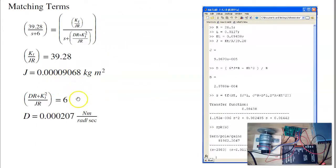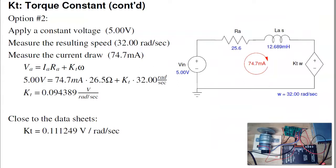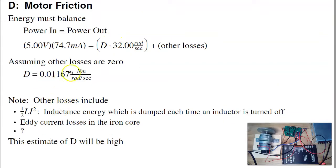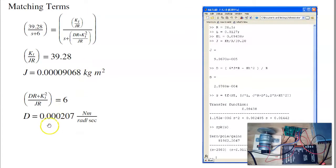Once you know the inertia, I can find friction. Matching the denominator, six is DR plus KT squared over JR. Calculating, D is 0.0002 newton meters per radian per second. And if you recall, what we calculated before was D was 0.011. This gives you 0.002. So again, the first estimate was pretty high. This is a better estimate. It matches actual data.